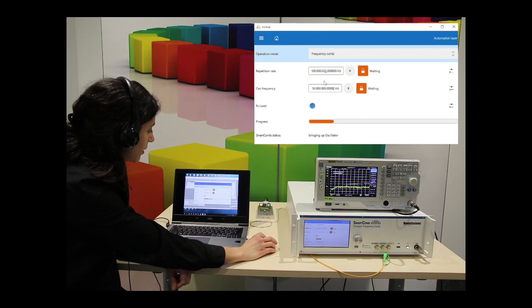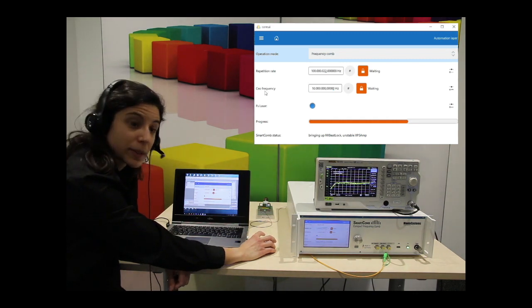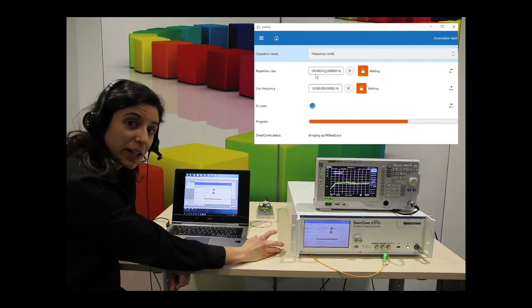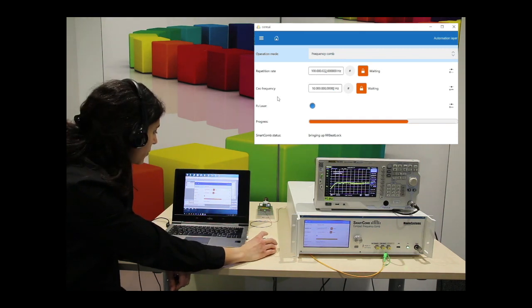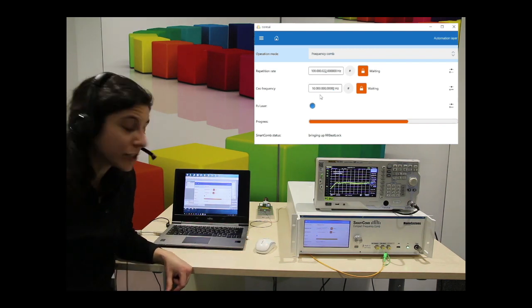What you see here is the repetition rate of the SmartCom, and here in the other box is the carrier envelope offset frequency. The repetition rate is fixed to 100 megahertz, while the CEO frequency is up to 10 megahertz.